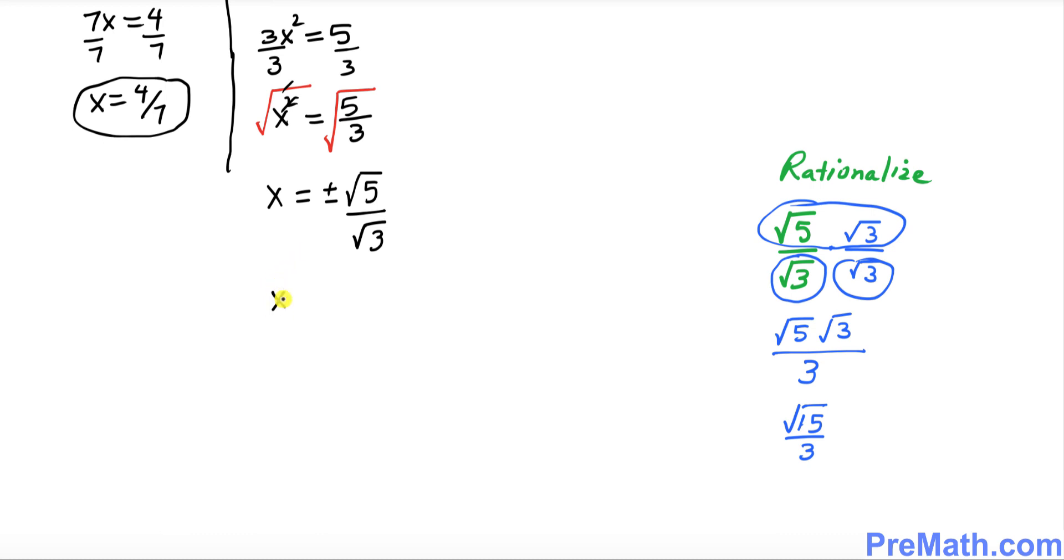So that means we simply got x equal to positive or negative square root of 15 over 3.